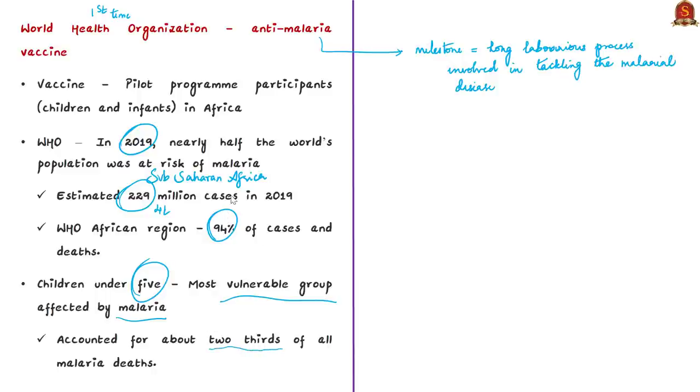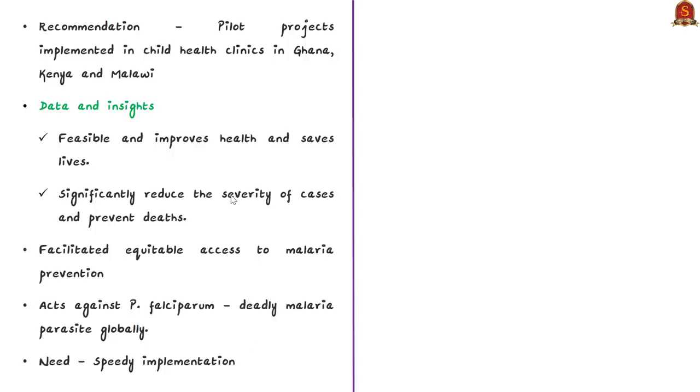One main thing to note is that children under the age of five were the most vulnerable group affected by malaria in 2019, and they alone accounted for about two-thirds of all malarial deaths. As per WHO, recommendations for the use of this malarial vaccine are based on key findings of pilot projects implemented in child health clinics in Ghana, Kenya and Malawi. These pilot projects were happening for over two years. Based on the data, it was evident that this vaccine was not only feasible to introduce, but also found to improve health and save lives.